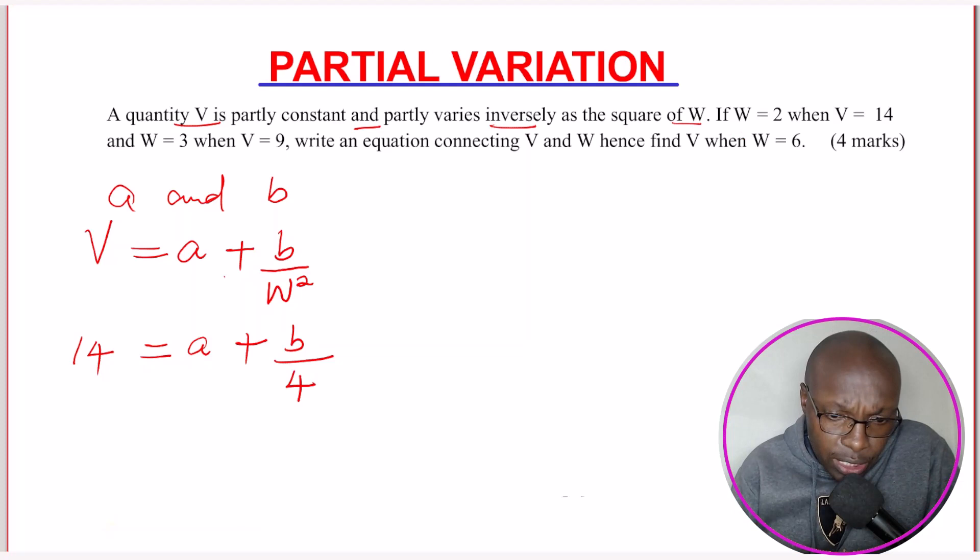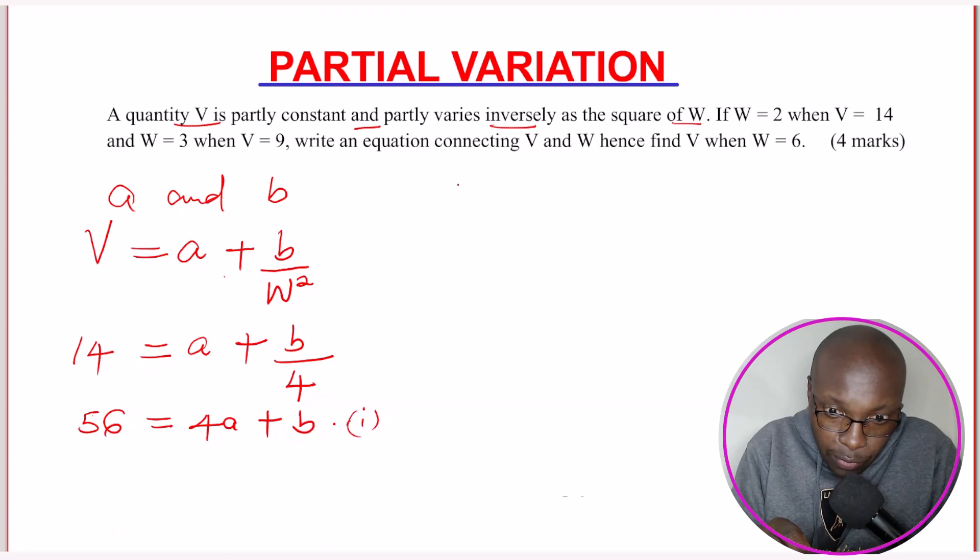You notice that this one will form an equation with two unknowns. So you want to get rid of this 4. Multiply each of these terms by 4. So 14 times 4, you get 56. This equals to A times 4, you get 4A. Plus this one B over 4, multiply by 4, you get B. So this one will give the first equation. That will be the first equation.